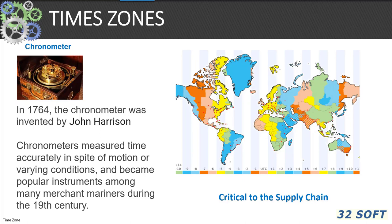Scottish-born Sir Sandford Fleming was the first to propose a worldwide system of time zones in 1879. Time zones are critical to the supply chain. If you have ever tried to coordinate a meeting across several time zones in Europe, the US, and Asia at the same time, it can be quite a challenge. With the advent of worldwide supply chain applications, this is becoming a more and more critical consideration in scheduling.